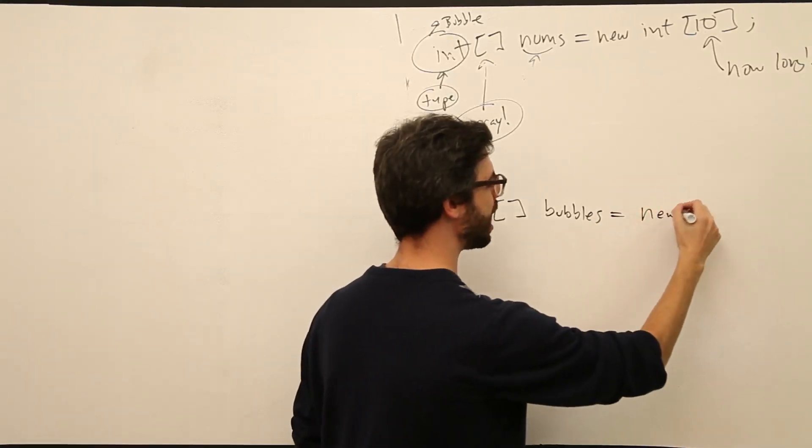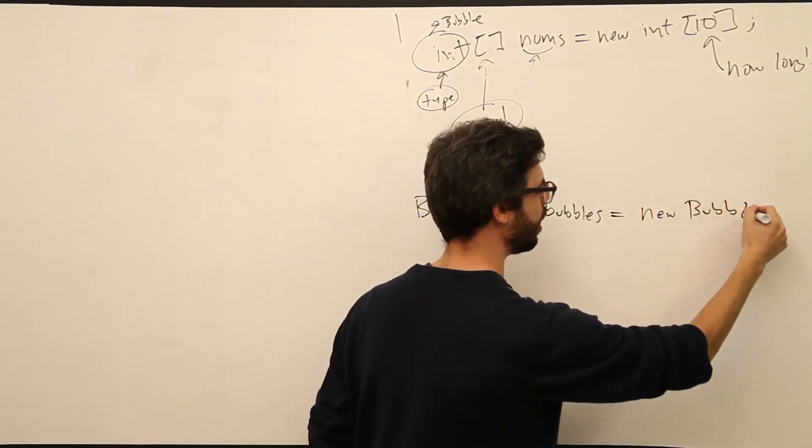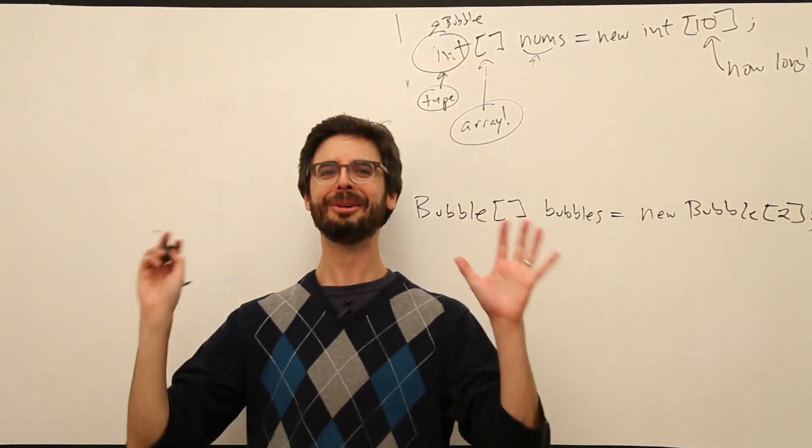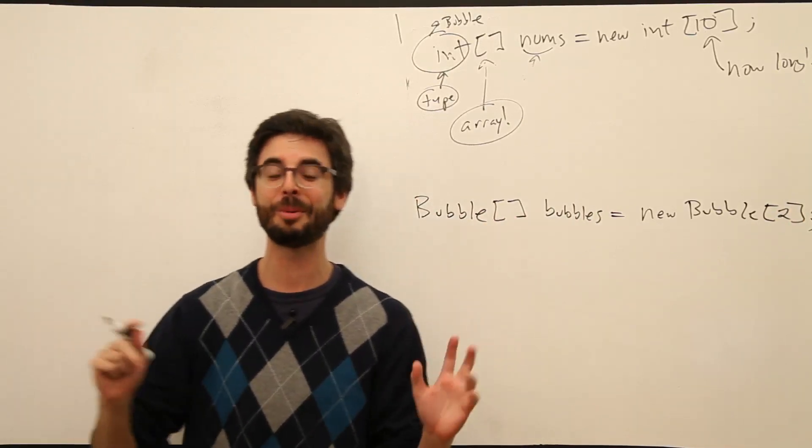And then we need to say, how many bubbles are we going to have in our array? We're going to have two. We're not getting very ambitious here. This is very basic and simple - we're going to have just two.